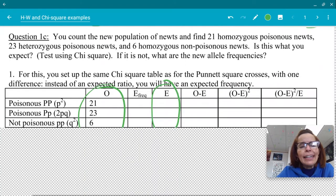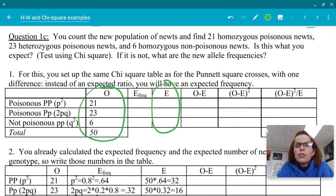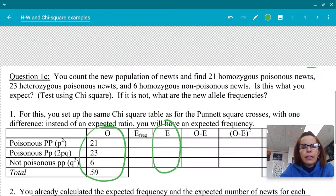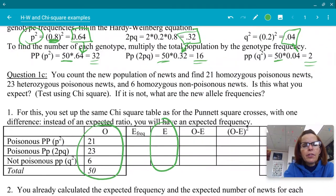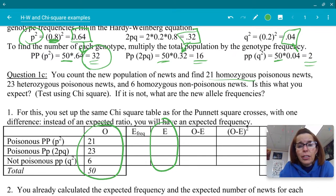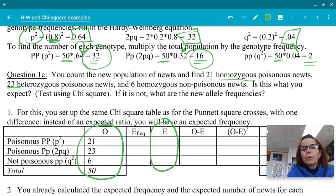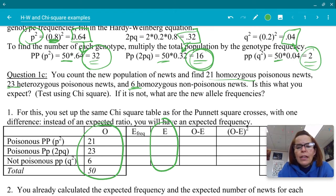Question 1C says you count the new population of 50 individuals. You find 21 homozygous poisonous. Let's bring this back up so you can compare them. Here's our numbers that we're expecting. You expected 21 homozygous poisonous, but you predicted 32. Now, is that a significant difference or not? Well, to prove whether it's significant at the 95% or higher level, we're going to use a chi-squared test for that. And 23 are heterozygotes. You predicted 16. And 6 are homozygous recessive, and you predicted 2. So it says, is this what you expect? Test using chi-square. If it is not, what are the new allele frequencies?